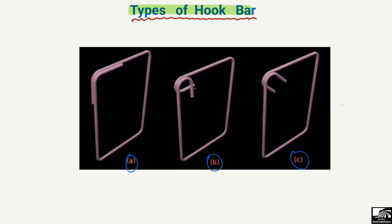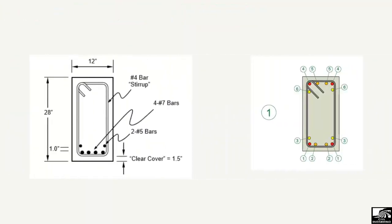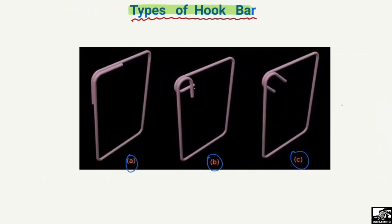To show where we use such types of hook bars, consider these two beam cross-sections. Stirrups are provided in the beam, and ties are provided in the column. These are provided in the column or beam in order to take shear forces or shear stresses. There are various types of hooks provided in these stirrups — for example, a 135 degree hook in this section, and also 90 degree or 180 degree hooks.